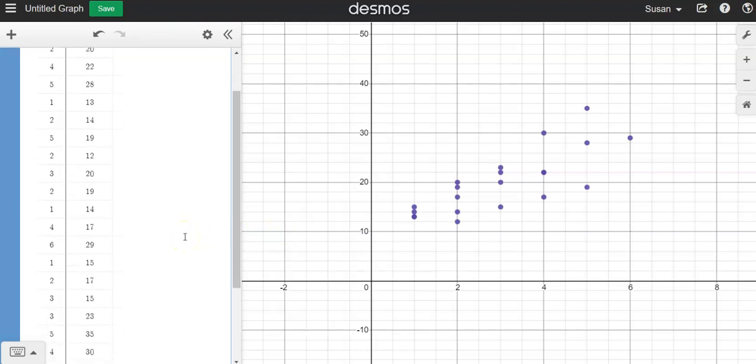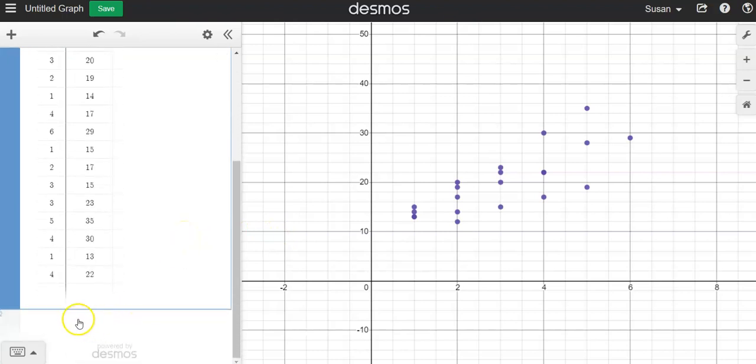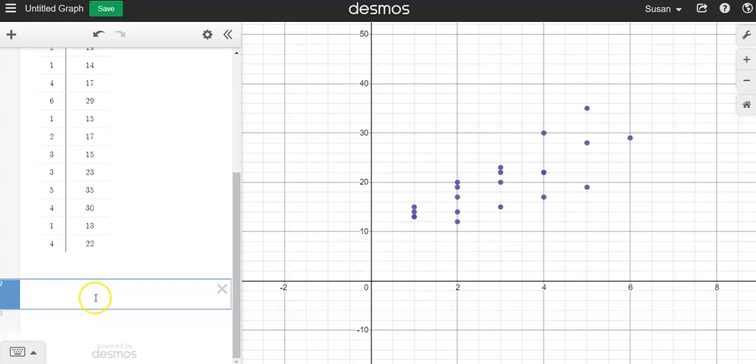So what we can do to analyze further is to scroll down to the bottom here and create a regression, a linear regression equation for these data. And the way you do that is you type y. Now normally we type y equals mx plus b, but since we're doing regression we're going to use the tilde. We use it for similar. So when you see that symbol, you do mx1 plus b.